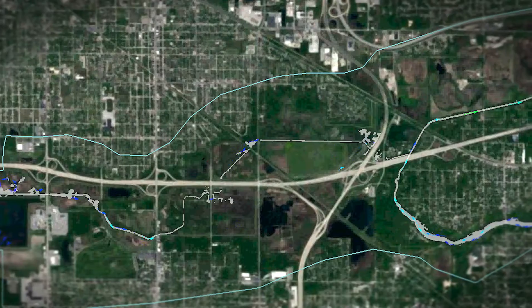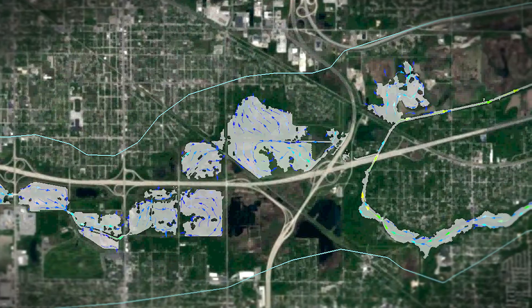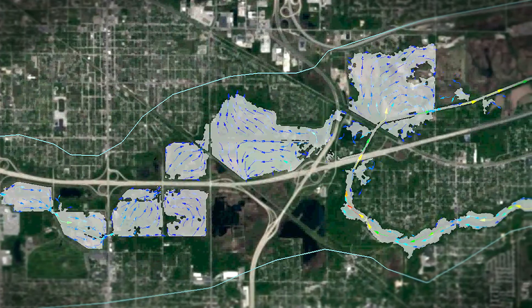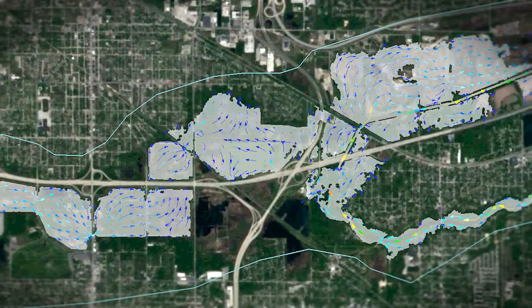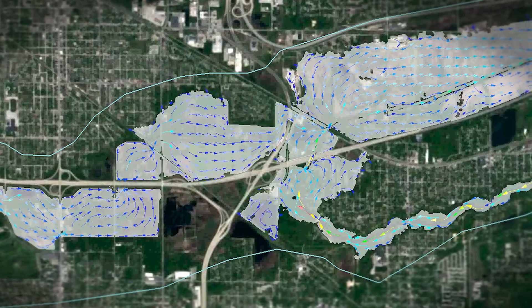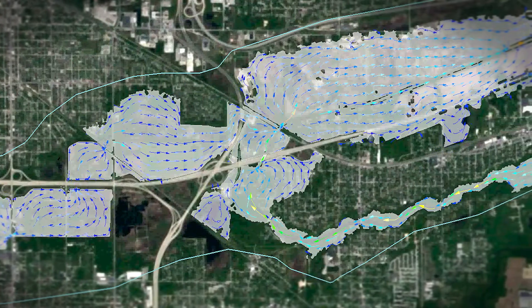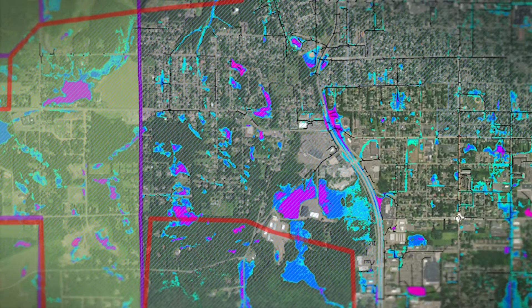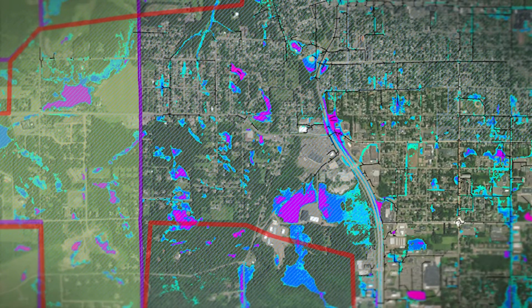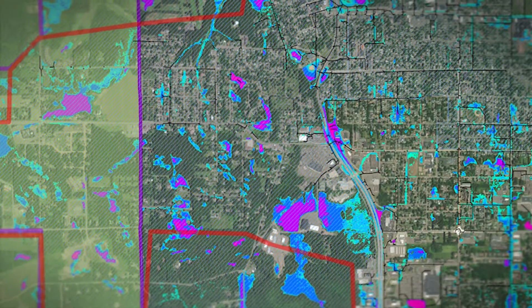We'll combine that with topographic data — basically a map of the elevations of the ground surface. The next step would be using land use and soil types to estimate the rainfall runoff that would occur for a given design storm. That can be used as another input to the model to ultimately give us a map of where we expect flooding and how deep we expect it to be.